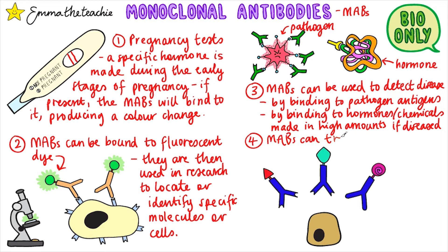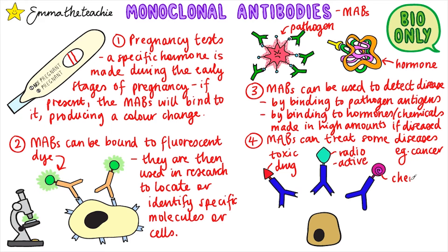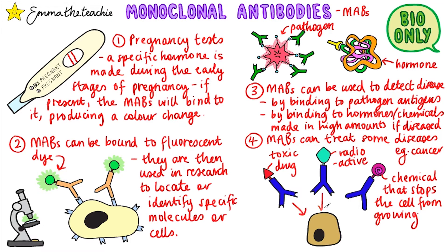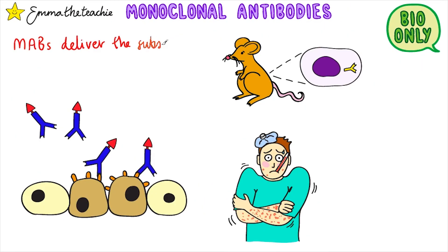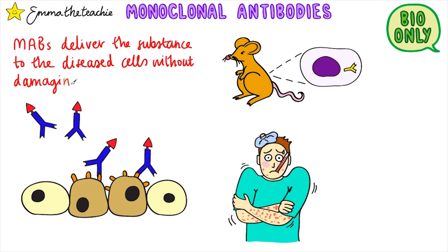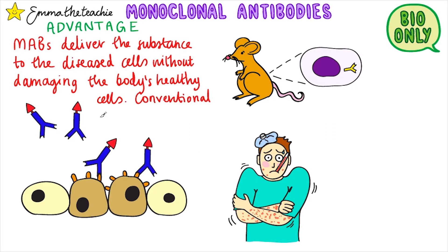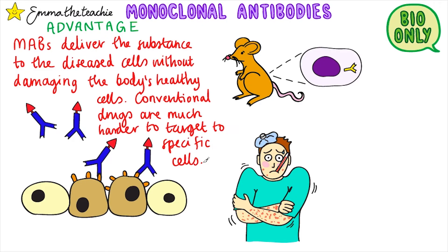Finally, monoclonal antibodies can be used to treat some diseases like cancer. A substance such as a toxic drug, a radioactive substance, or a chemical that stops the growth of cells can be attached to the monoclonal antibody. When it binds to the tumor cell's antigens it delivers the substance to the cell. This is a huge advantage — monoclonal antibodies deliver substances to disease cells without damaging the body's healthy cells. Conventional drugs are carried all over the body and are much harder to target, resulting in damage to healthy cells. Targeting cells based on their antigens allows a much more specific response.